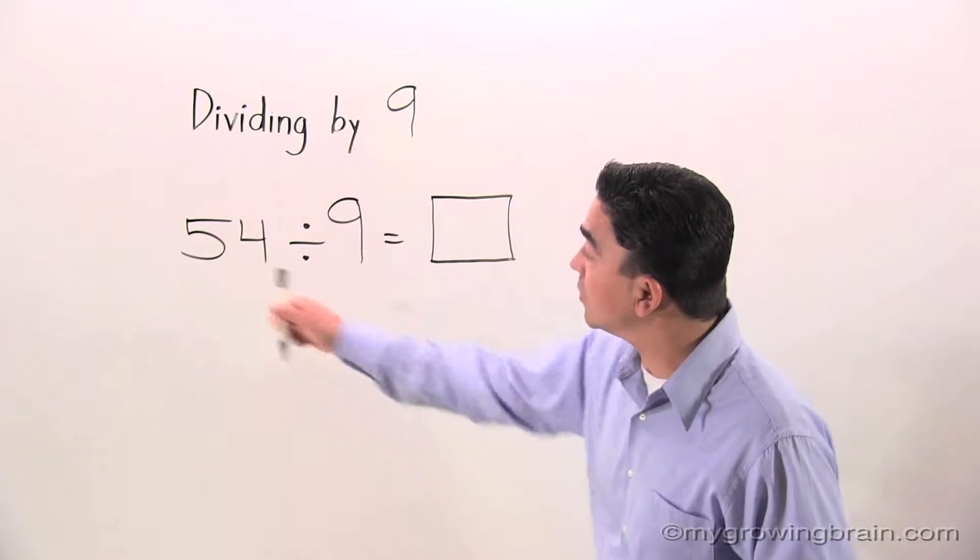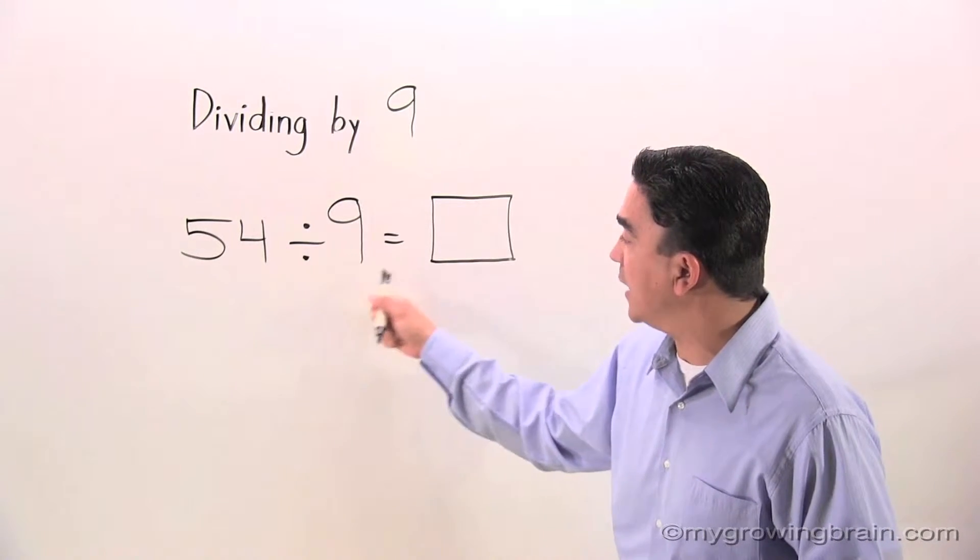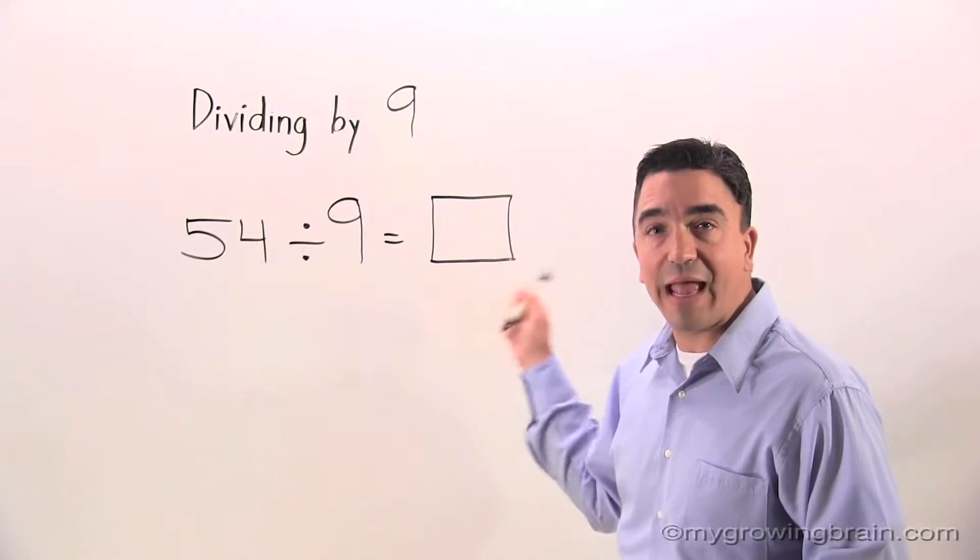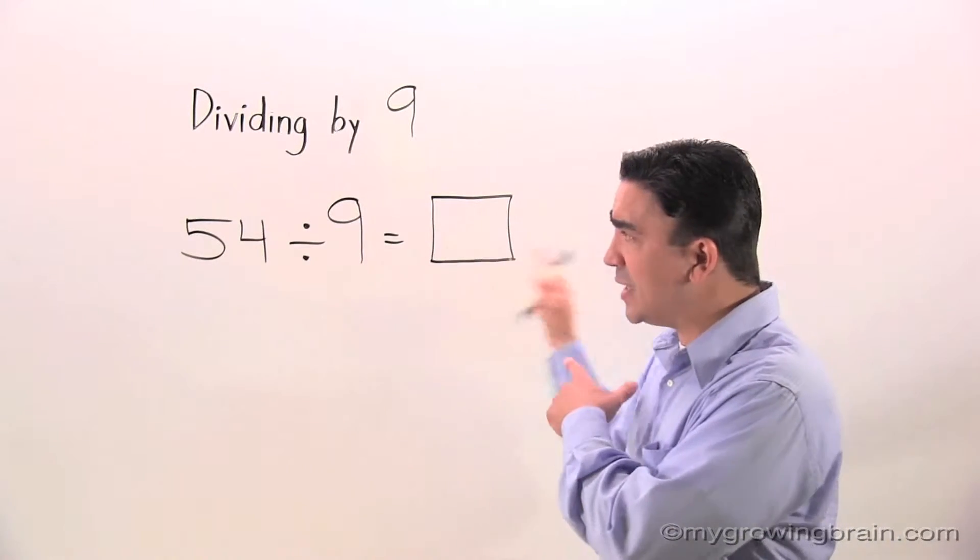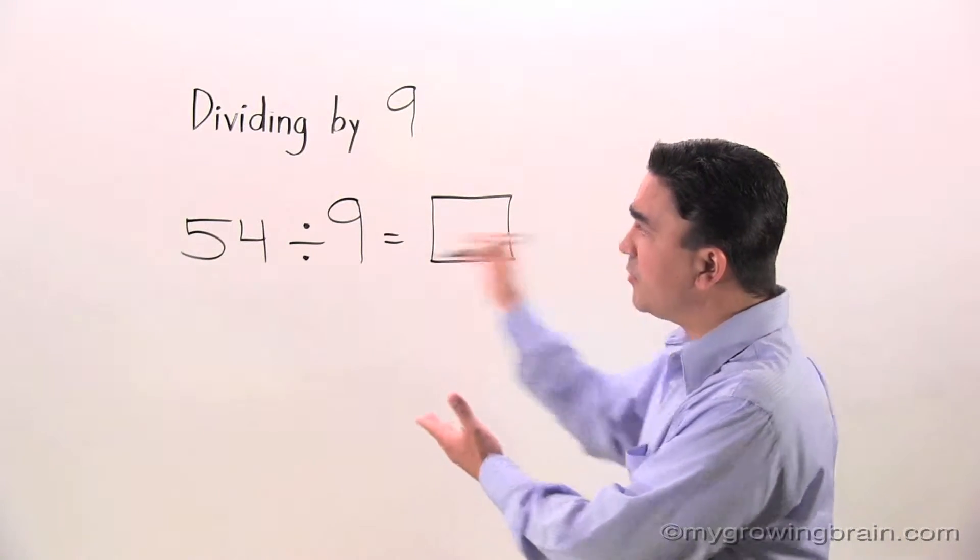As you see on the board, I wrote 54 divided by 9 equals blank. Let's talk about what each of these symbols and numbers mean.